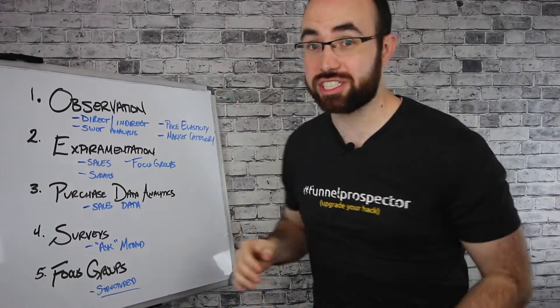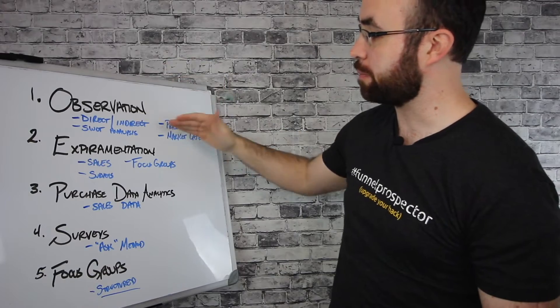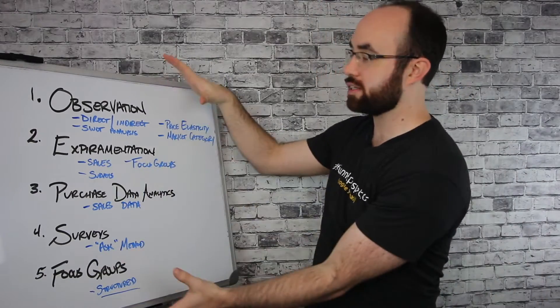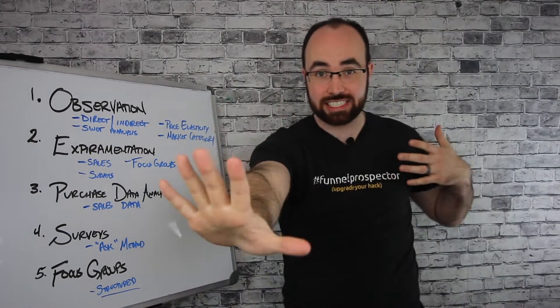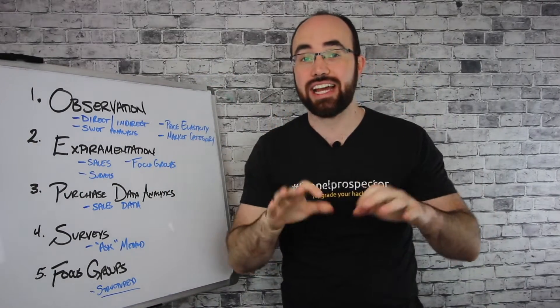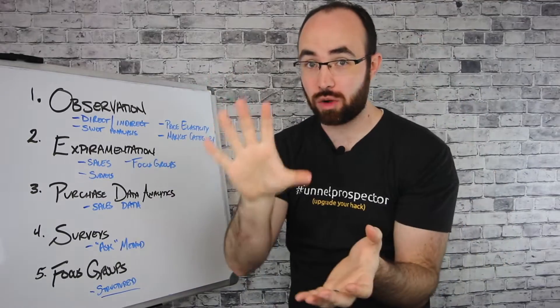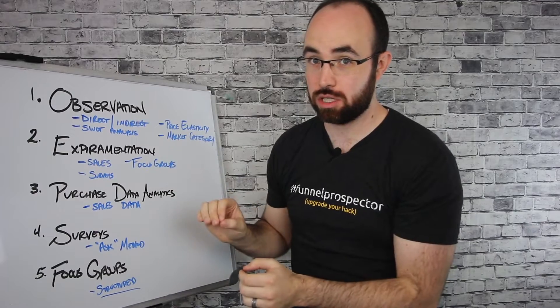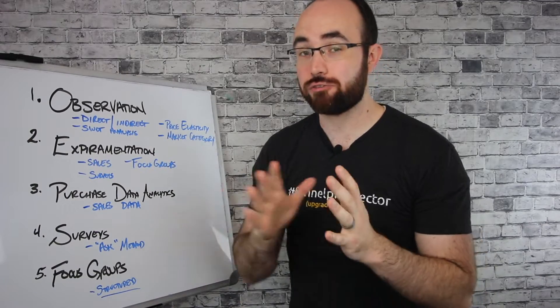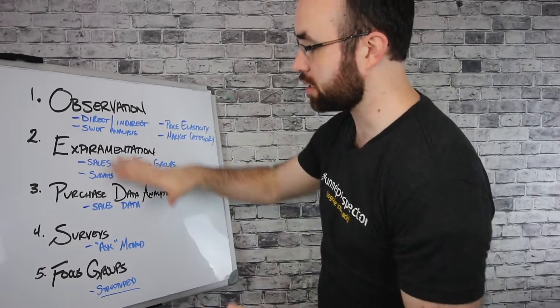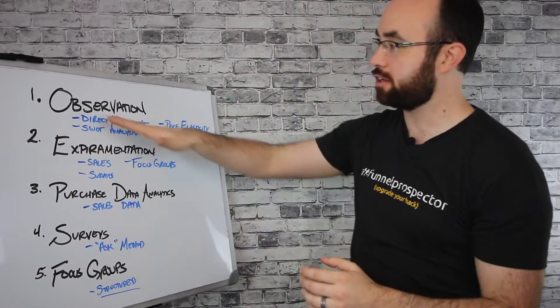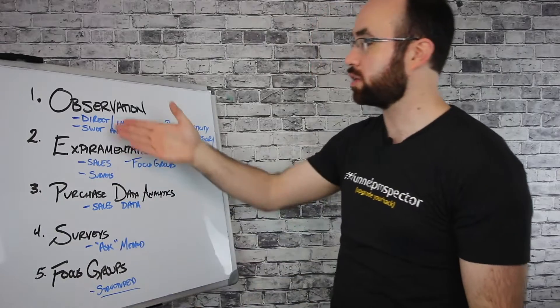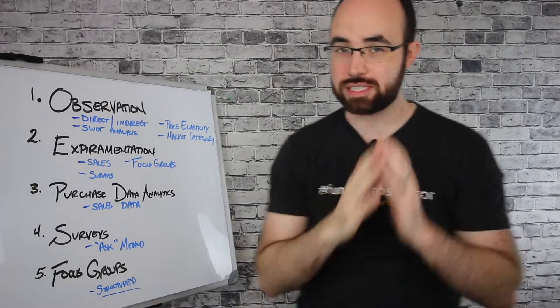This is the traditional method. It goes through observation, experimentation, purchase data analytics, surveys, and focus groups. The whole process is meant to do it at a distance from the customer. They want data about the customer. They want to see graphs. They want to see all of these things as quantitative as possible. That's the process for an MBA style process of market research. You're going to begin your observations, which is seeing what's happening in the market. You're going to look at direct and indirect competitors.